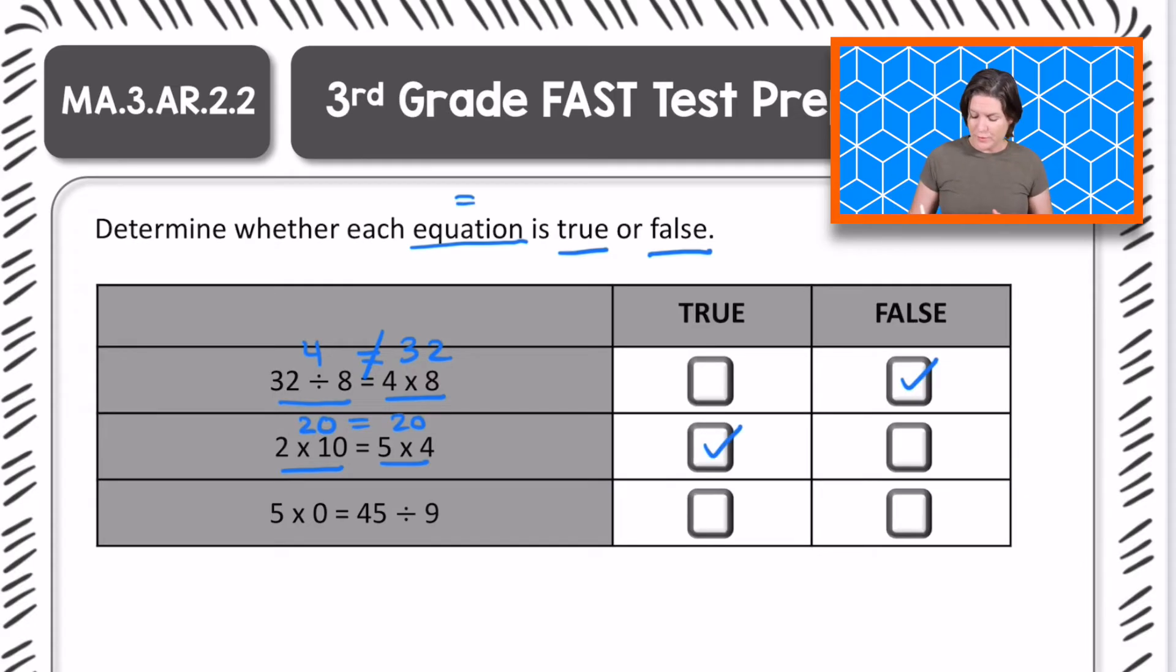And now for the last one. So on the left side, we have 5 times 0. And anytime we have a factor of 0, the product is also 0. And then on the right side, we have 45 divided by 9. What is 45 divided by 9? Yeah, it's 5.